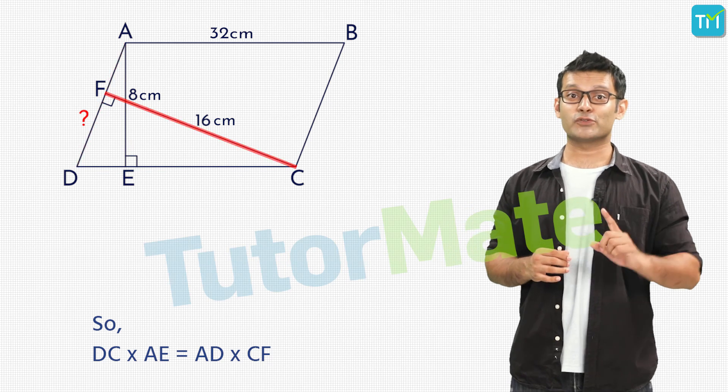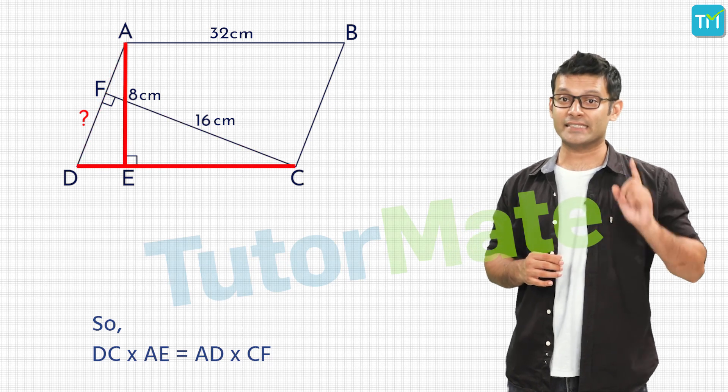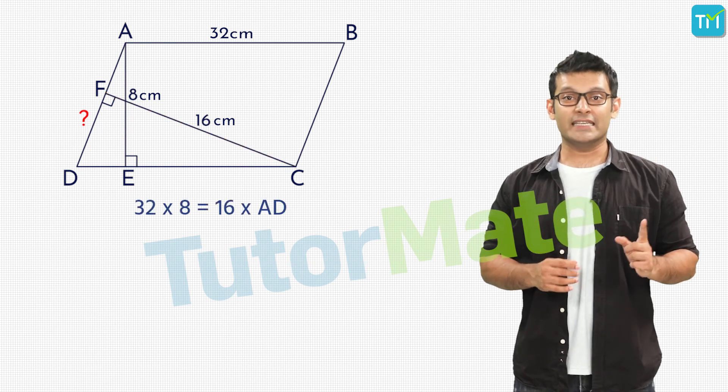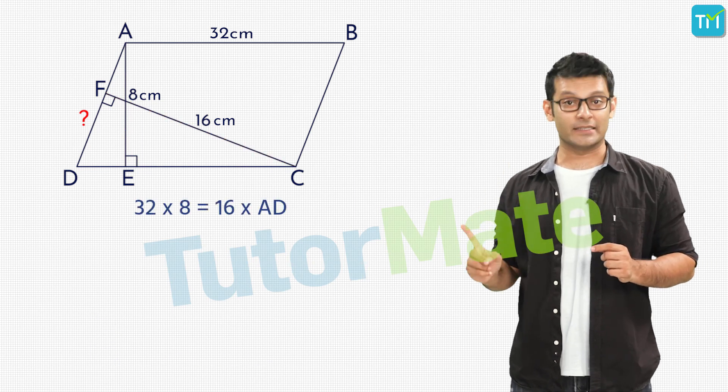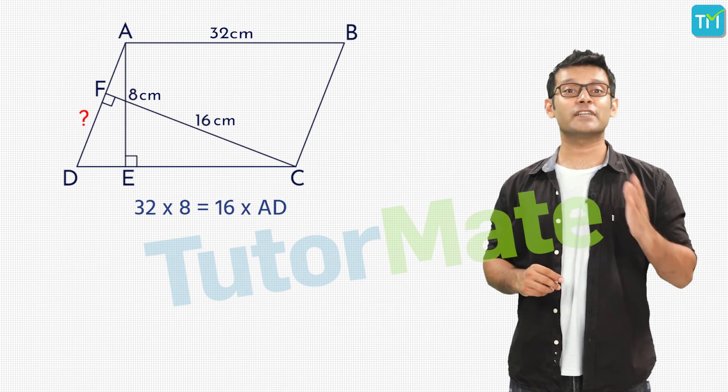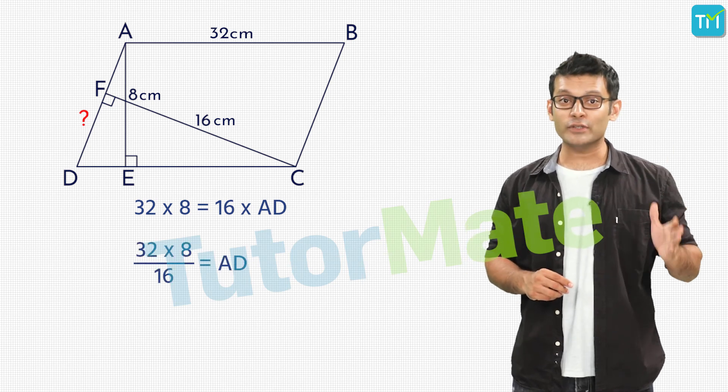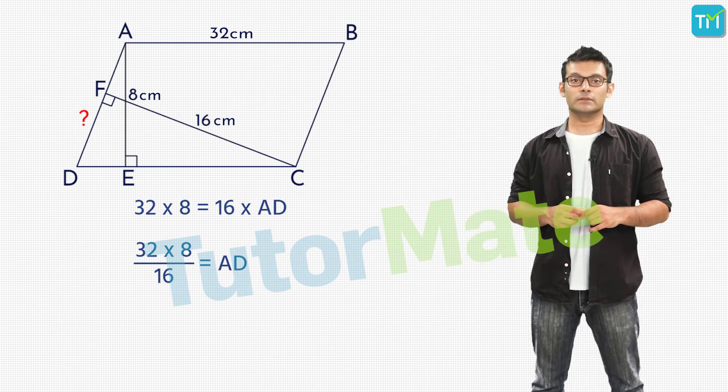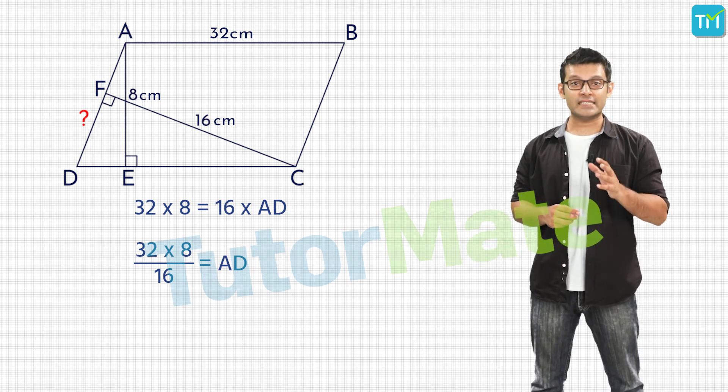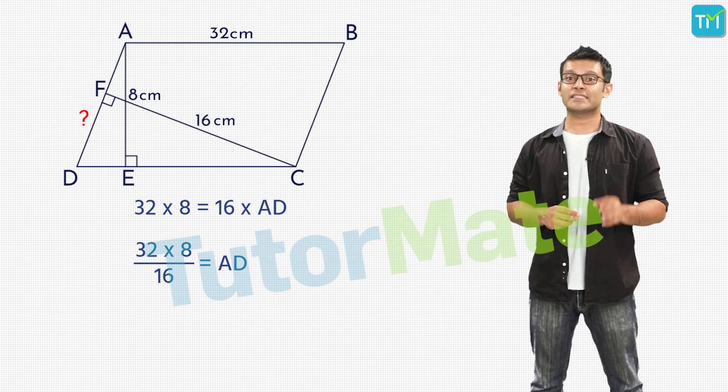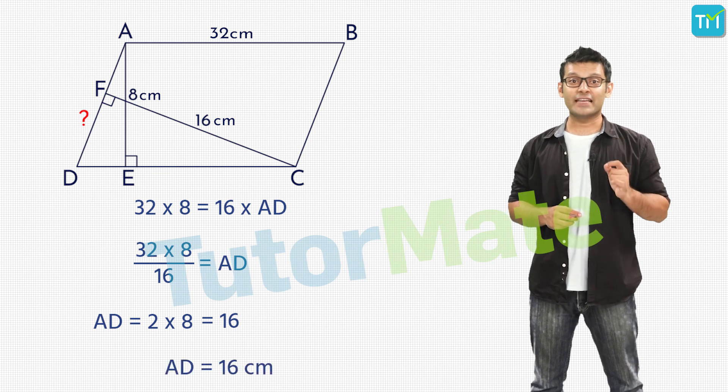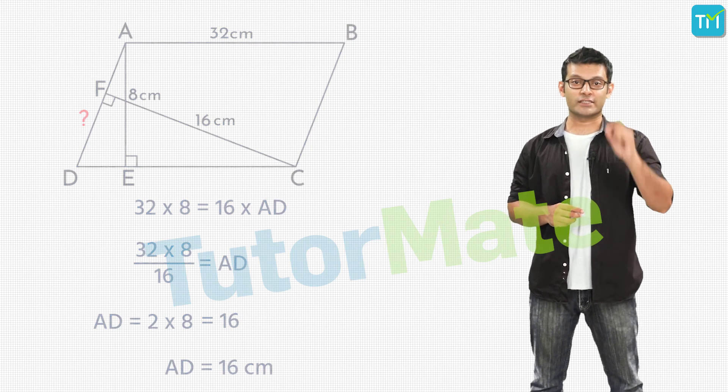Substituting the values of DC as 32, AE as 8 and CF as 16 we get 32 into 8 is equal to 16 into AD. Taking 16 to the left hand side we will have 32 into 8 divided by 16 is equal to AD. Now 32 divided by 16 is equal to 2 so that gives us AD as 2 into 8 which is equal to 16. Therefore, we have the length of AD as 16 units.